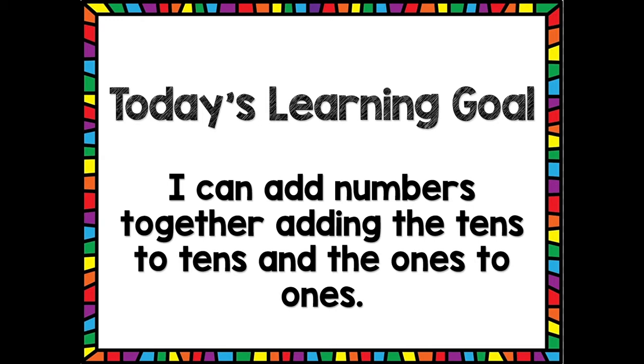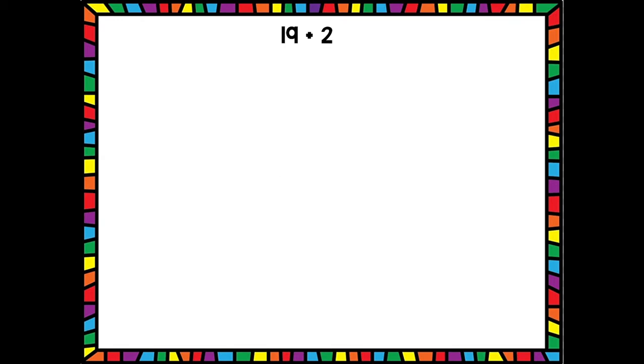We're going to do a quick review of how to use quick tens and ones to do this addition, how to use number bonds to do this type of addition, and then we're also going to be looking at dimes and pennies today. So get excited! Our first problem: 19 plus 2. Let's start out using our quick tens and ones to do this problem.